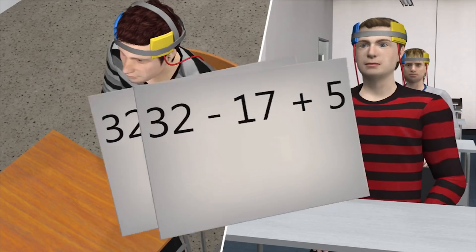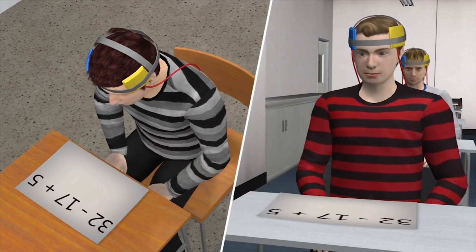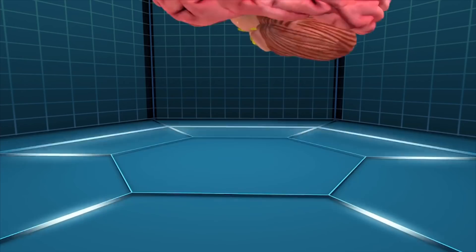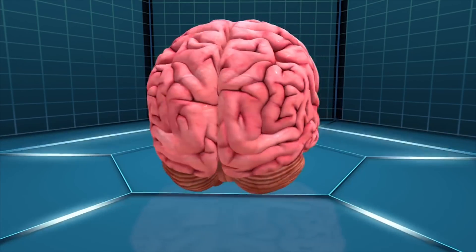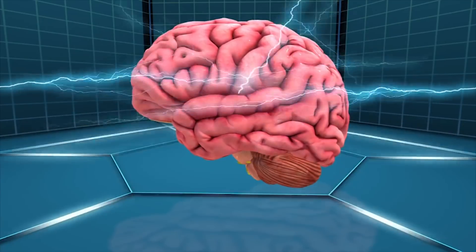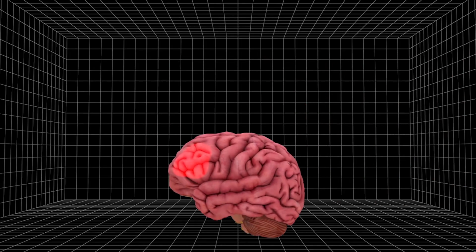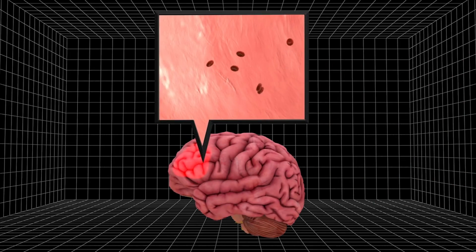Scientists presented math equations to a control group that received no stimulation, and an experimental group that received randomly fluctuating electrical currents to their heads.